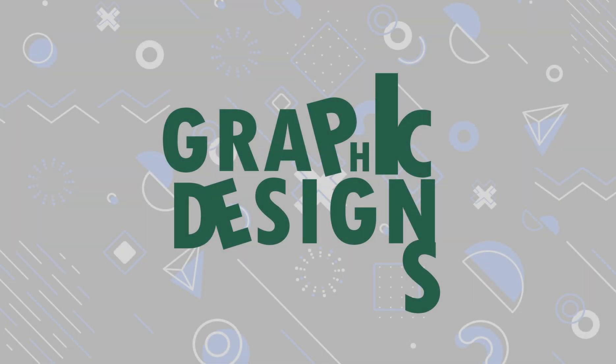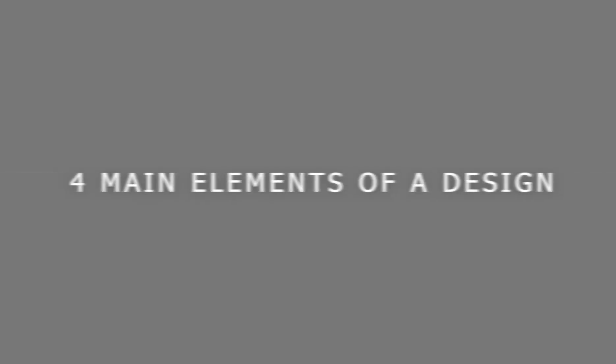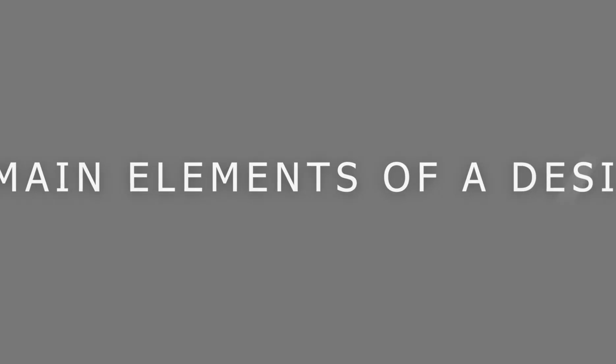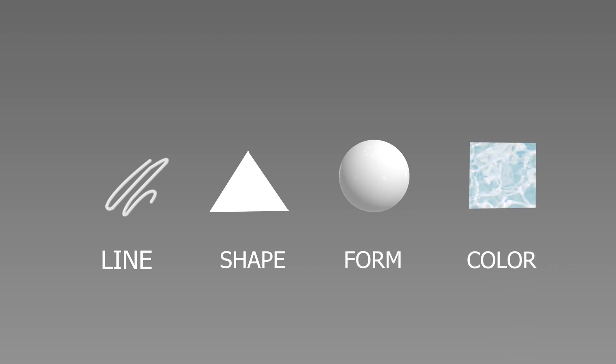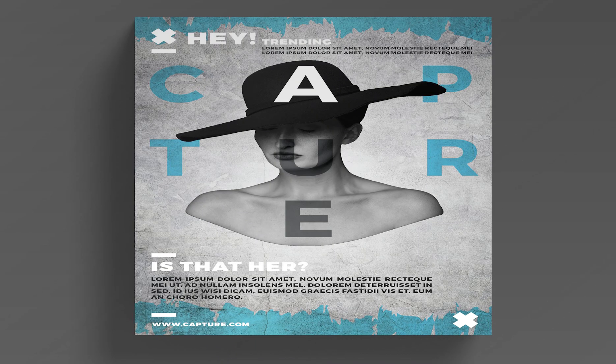Now, to know what makes a design is very important. There are four main elements that act as the root of a design: a line, a shape, a form, and a color. Combined together, you will get a beautiful design like what you are seeing right now on the screen.